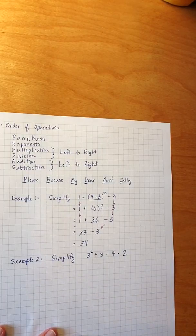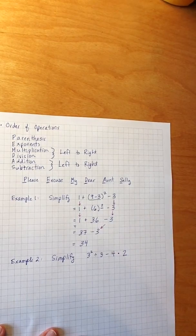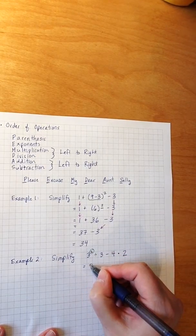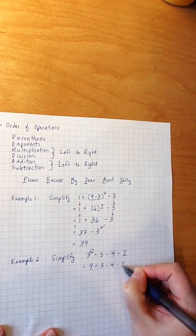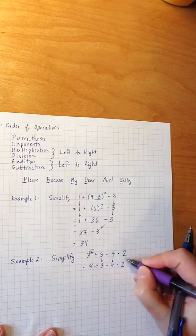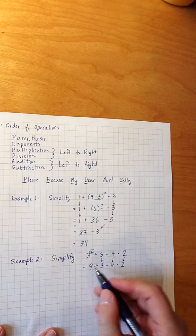I move on to exponents. In this case, I do have an exponent. Again, that exponent is a squared. So I simplify that and I get 9 divided by 3 minus 4 times 2. And again, you can see that the 3 stayed and the minus 4 stayed and the times 2 stayed the same. Only the 3 squared got simplified.